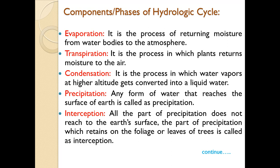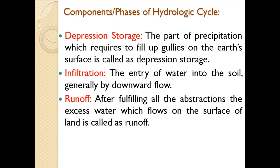After condensation, there is precipitation — any form of water that reaches the surface of the earth. Next is interception: whenever precipitation occurs, not all of it reaches the earth's surface; some is retained on the foliage or leaves of trees. Depression storage is the part of precipitation required to fill up gullies on the earth's surface. Infiltration is the entry of water into the soil by downward flow into the crust of the earth. Finally, runoff is the excess water that flows on the surface of land after fulfilling all abstractions.